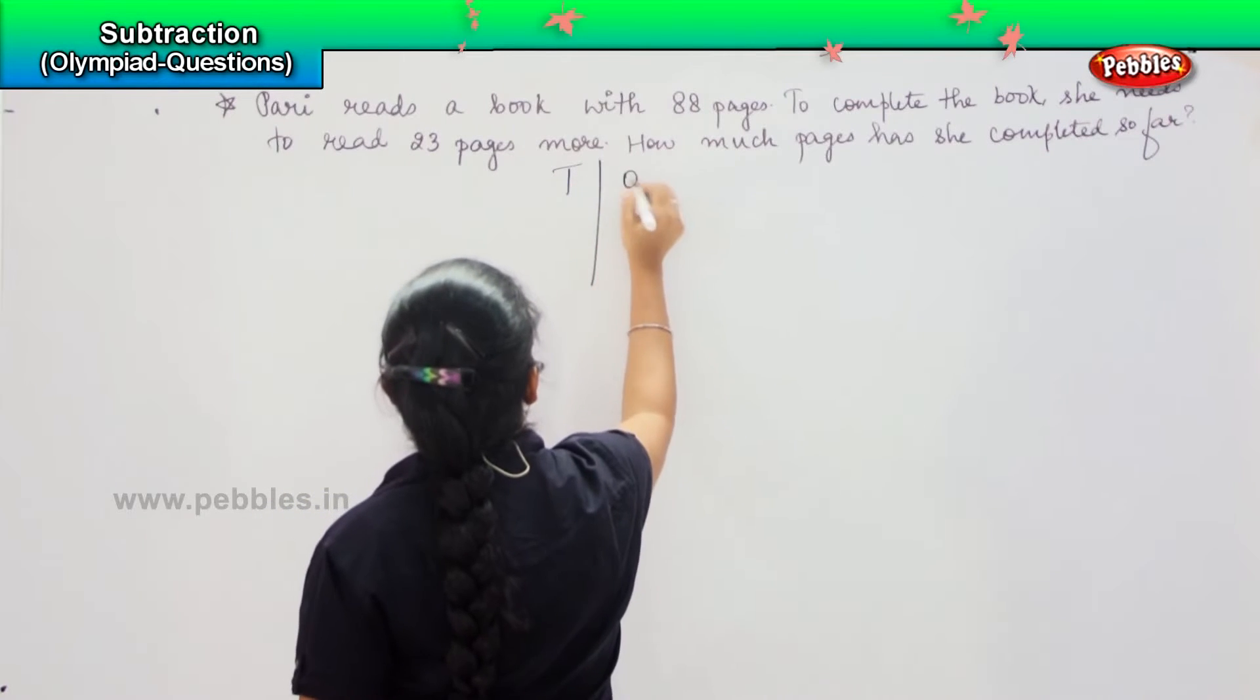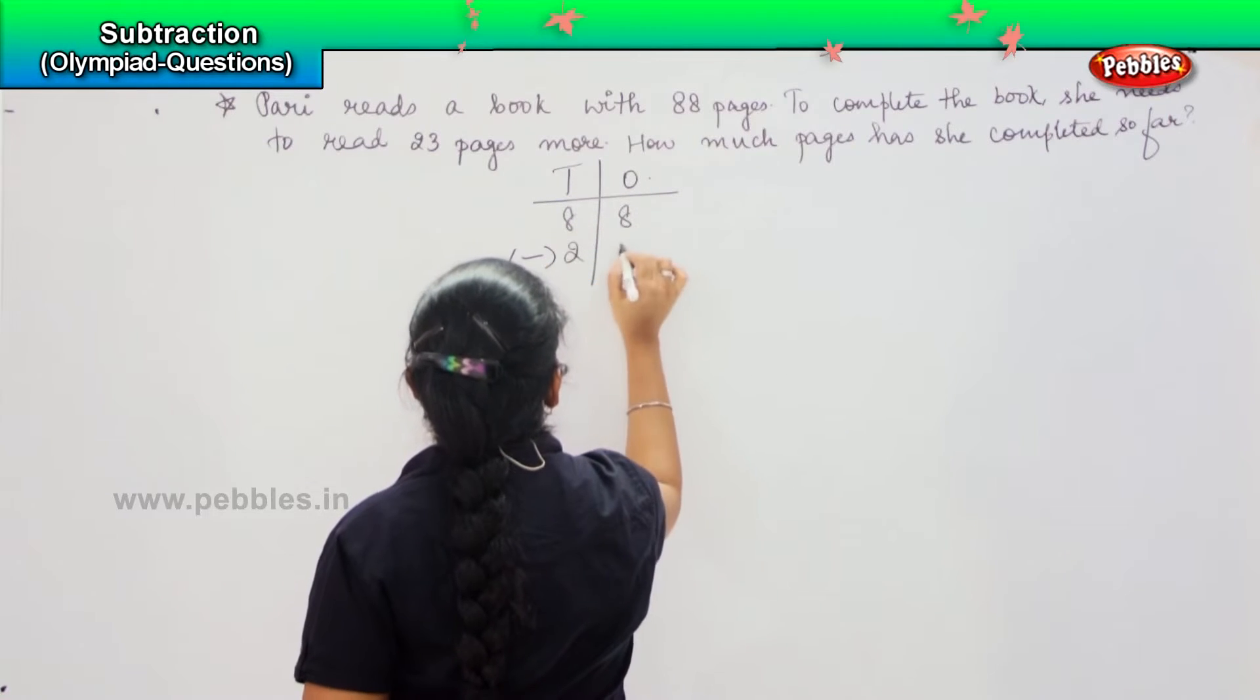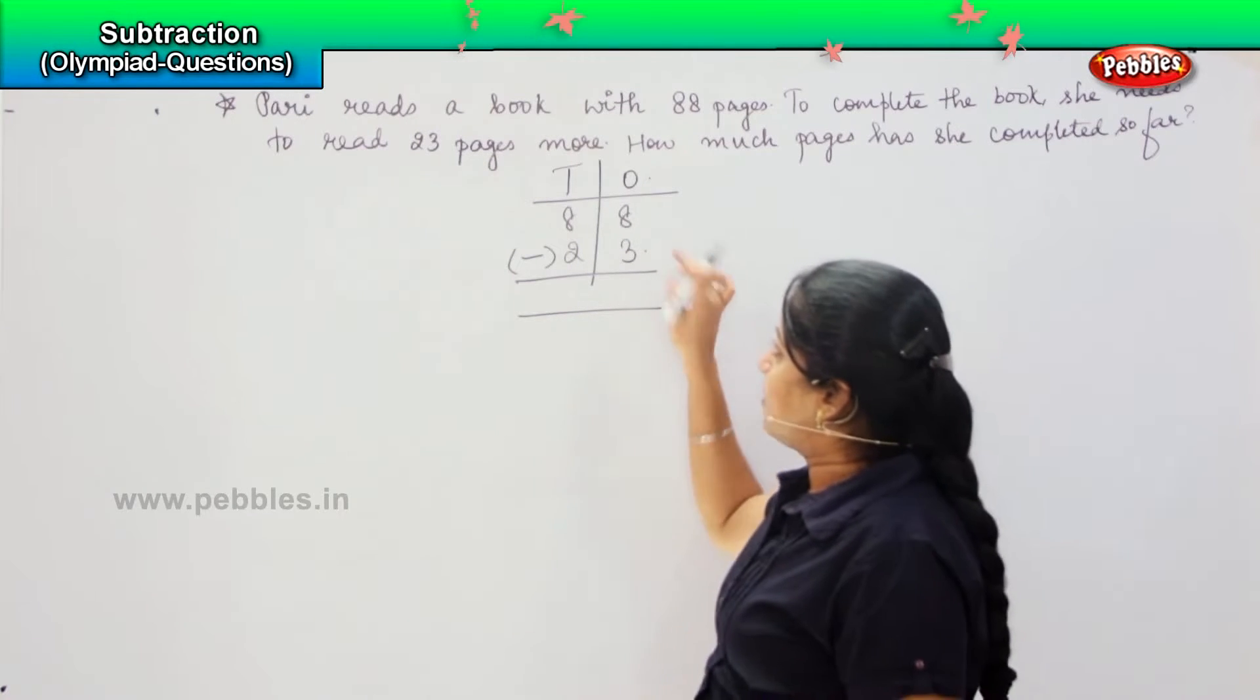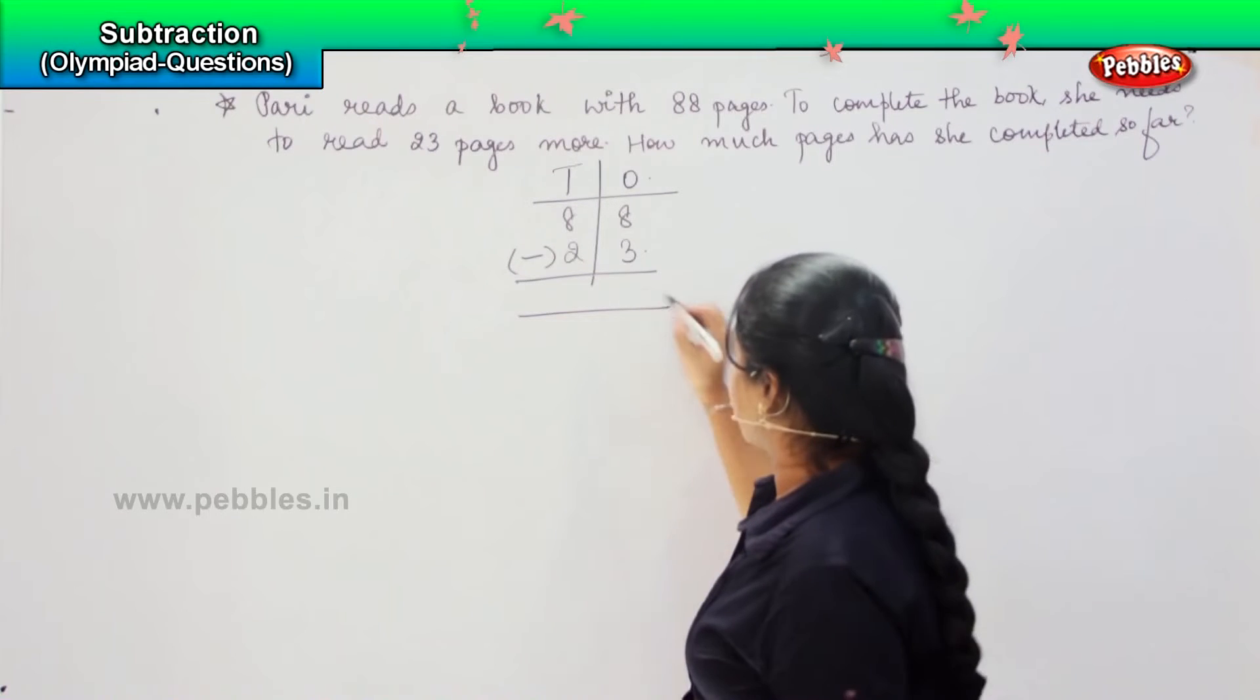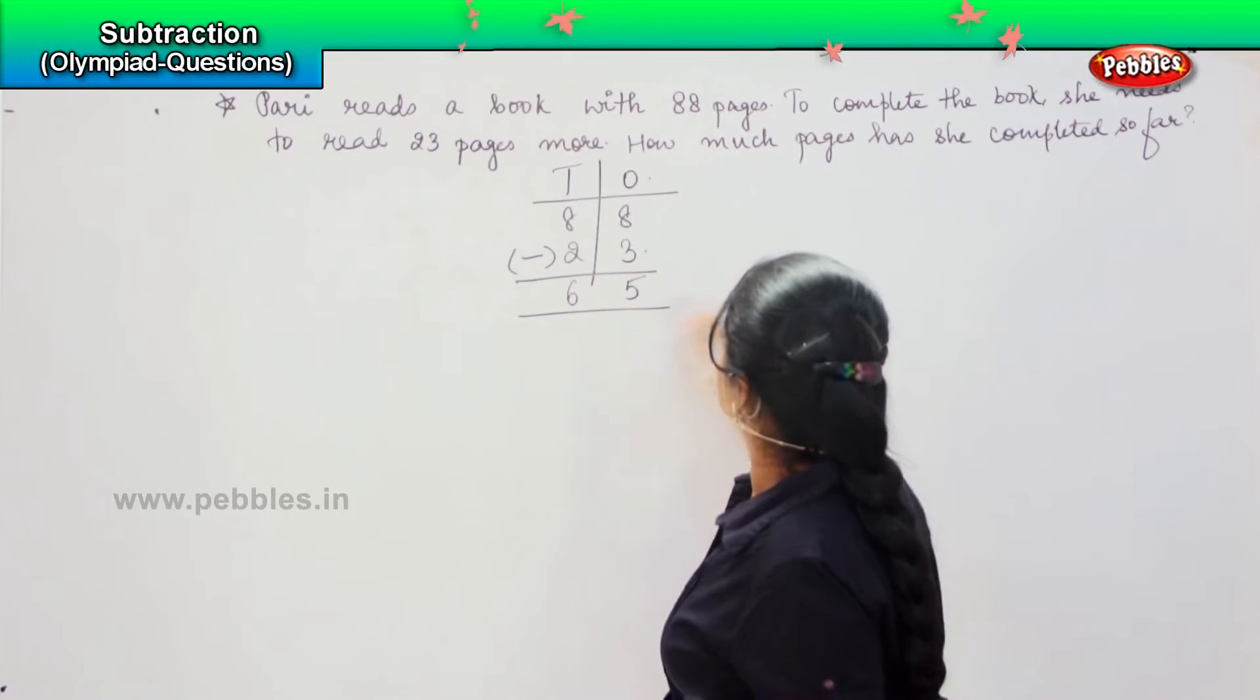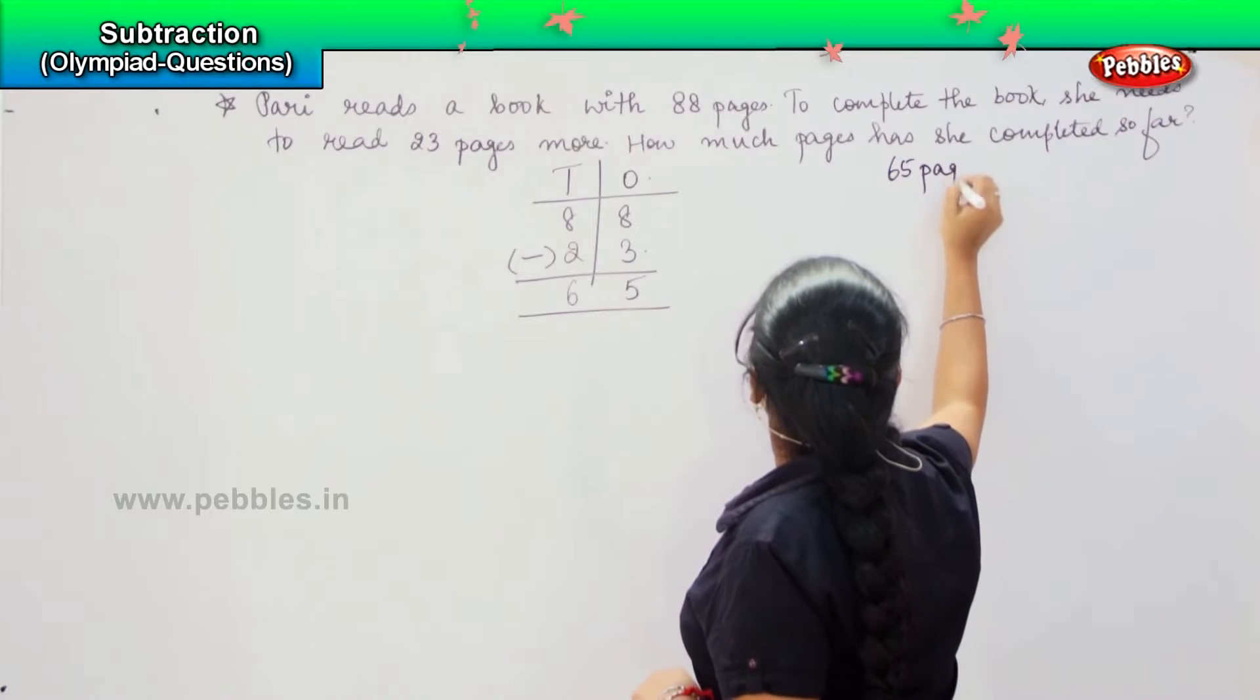So 88 minus 23. Now, here children, since 8 is greater than 3, there is no need of borrowing. 8 minus 3 is 5, and 8 minus 2 is 6. So which means she has already completed 65 pages.